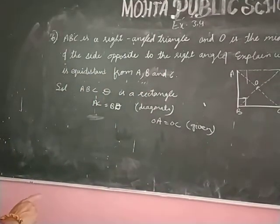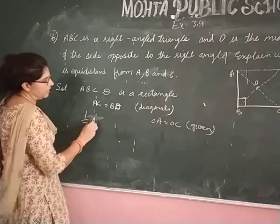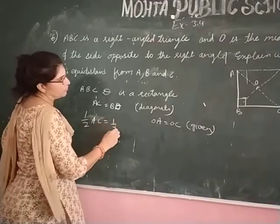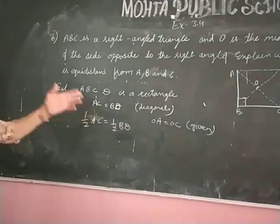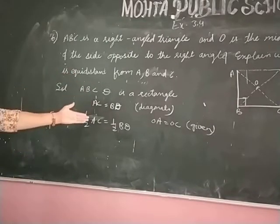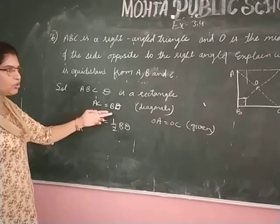Now see, we halve both of these. Half of AC is equal to half of BD. Half of AC, half of BD, multiply both by half.